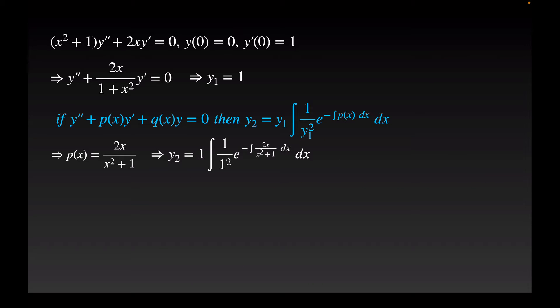So y2 is going to be 1 times the integral of 1 over 1 squared e to the negative integral 2x over x squared plus 1 dx dx. So I've got to integrate that 2x over x squared plus 1, and I can do that with a simple substitution. I use w equals x squared plus 1, then dw equals 2x dx.